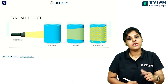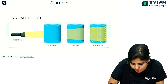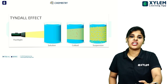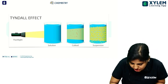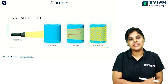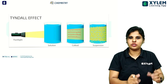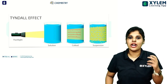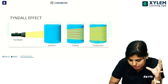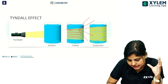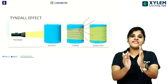Using a torchlight beam, colloid particles scatter the light. True solution particles are very small and cannot scatter the light. In colloids, the particles are large enough to scatter the light beam, and that is why the path becomes visible.